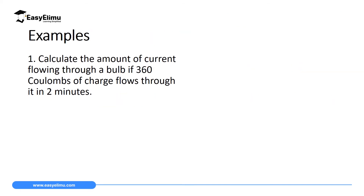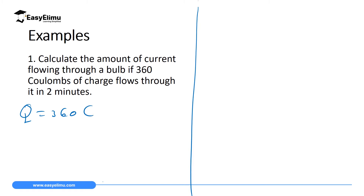Let's do worked examples using the equation for current — charge per unit time. When doing physics questions, the first thing you must do is list down what you have and what you don't have before starting your calculation. The question reads: calculate the amount of current flowing through a bulb if 360 coulombs of charge flow through it in two minutes. So the charge Q is 360 coulombs, and the time is 2 minutes. We convert to SI units: 2 × 60 = 120 seconds.